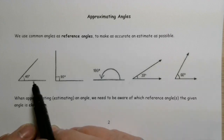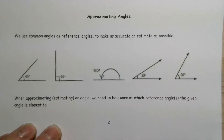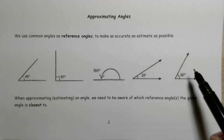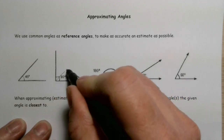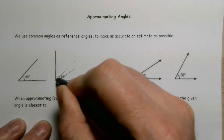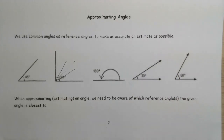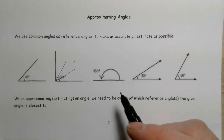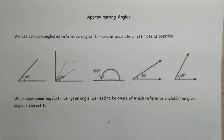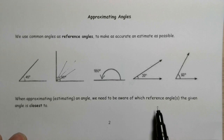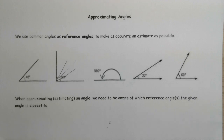So 30 degrees is going to be a little bit less than 45 degrees — a little bit less than half of 90. 60 degrees, on the other hand, is going to be a little bit more than half of 90. You might think of it like this: you've got 45 going right down the center, 30 below it, and 60 above it. And then 180 degrees is that straight angle. When approximating an angle, we need to be aware of which reference angles the given angle is closest to.